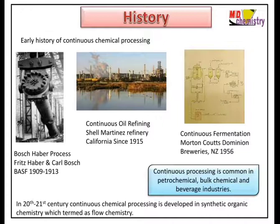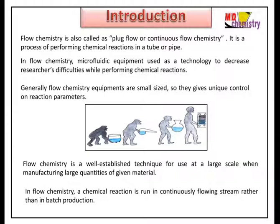Continuous processing is common in petrochemical, bulk chemical, and beverage industries. In the 20th to 21st century, continuous processing developed in synthetic organic chemistry, which is termed flow chemistry. Flow chemistry is also called plug flow or continuous flow chemistry — it is a process of performing chemical reactions in a tube or pipe. It gives faster reactions, reduction in byproducts, and is cost effective.